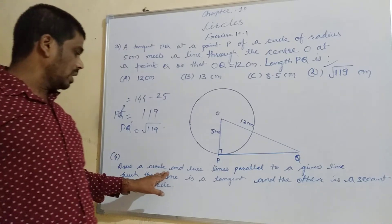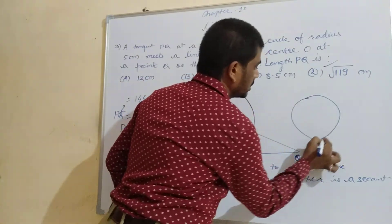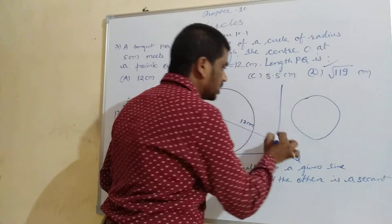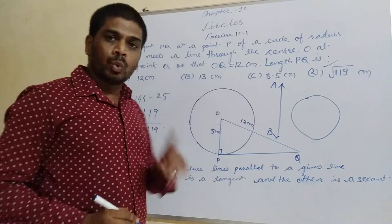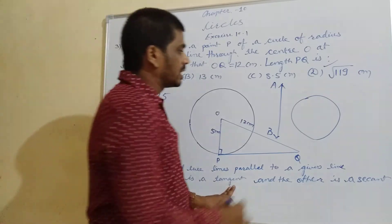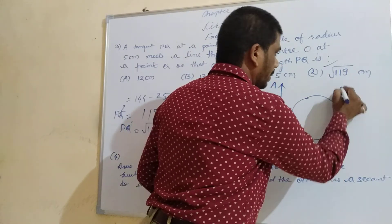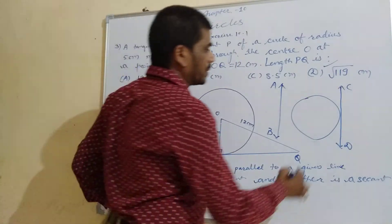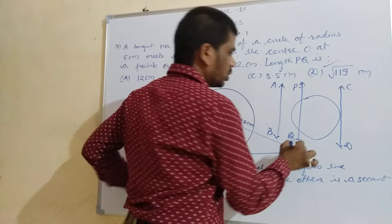Next: draw a circle and 2 lines parallel to a given line. Suppose the given line is AB. We need to draw 2 lines parallel to AB — one is a tangent to the circle which is parallel to AB, and the other is a secant of the circle, also parallel to AB. We label the points C, P, and D accordingly. In this way you have to draw the figure.